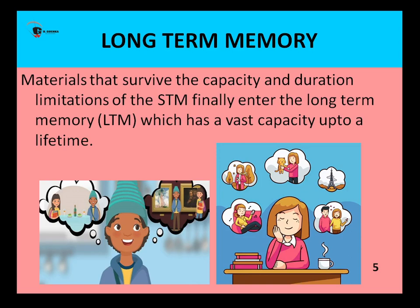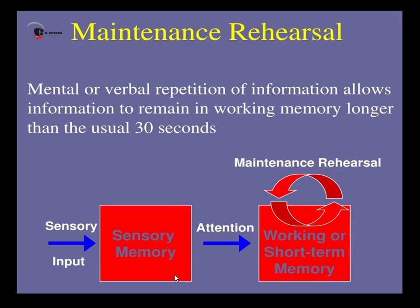Now we're going to go to the control processes. We have four of the most important control processes: selective attention, maintenance rehearsals, chunking, and elaborative rehearsals. Control processes are there to monitor the flow of information through various memory stores.